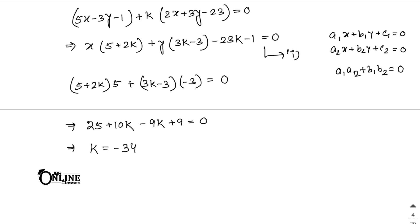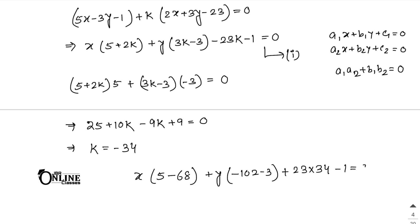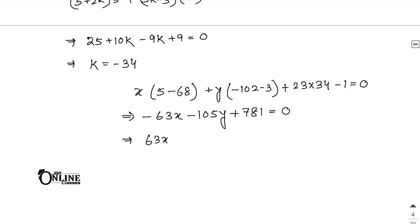Now put the value of k equal to minus 34 in equation number 1. So x into 5 plus minus 34 into 2, that is 5 minus 68, equals minus 63. Then y into 34 into 3 equal to 102, so minus 102 minus 3 gives minus 105. Then 23 into minus 34 is negative, so positive, then minus 1, equal to 0. So 23 times 34 is 782, minus 1 is 781. Final answer: 63x plus 105y minus 781 equal to 0.